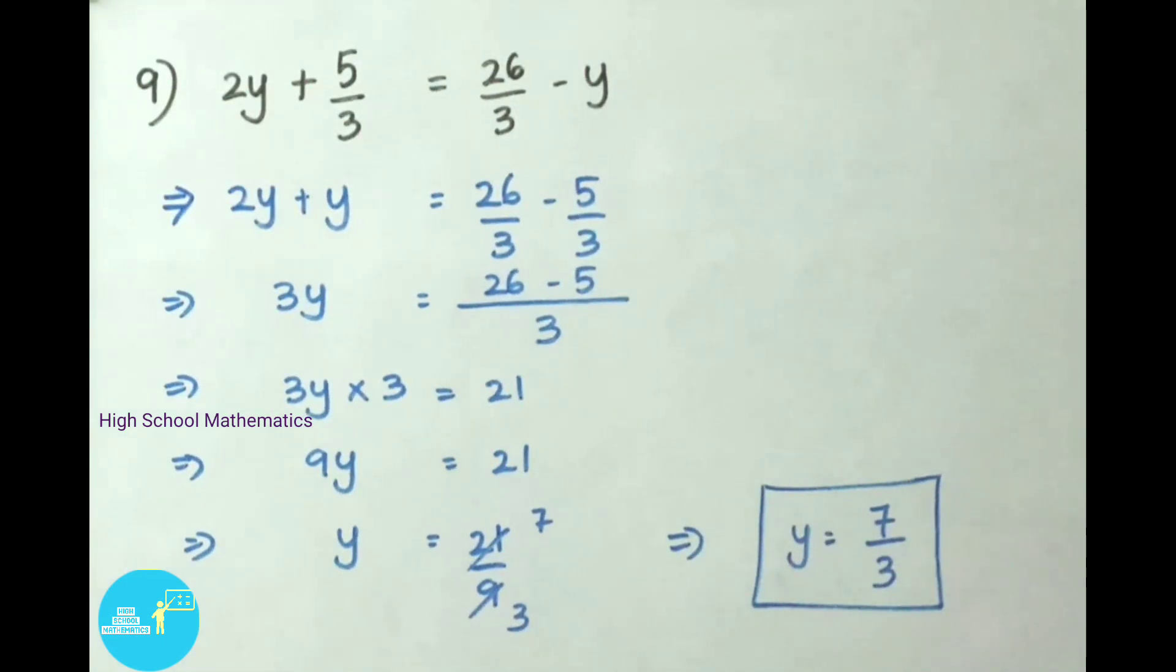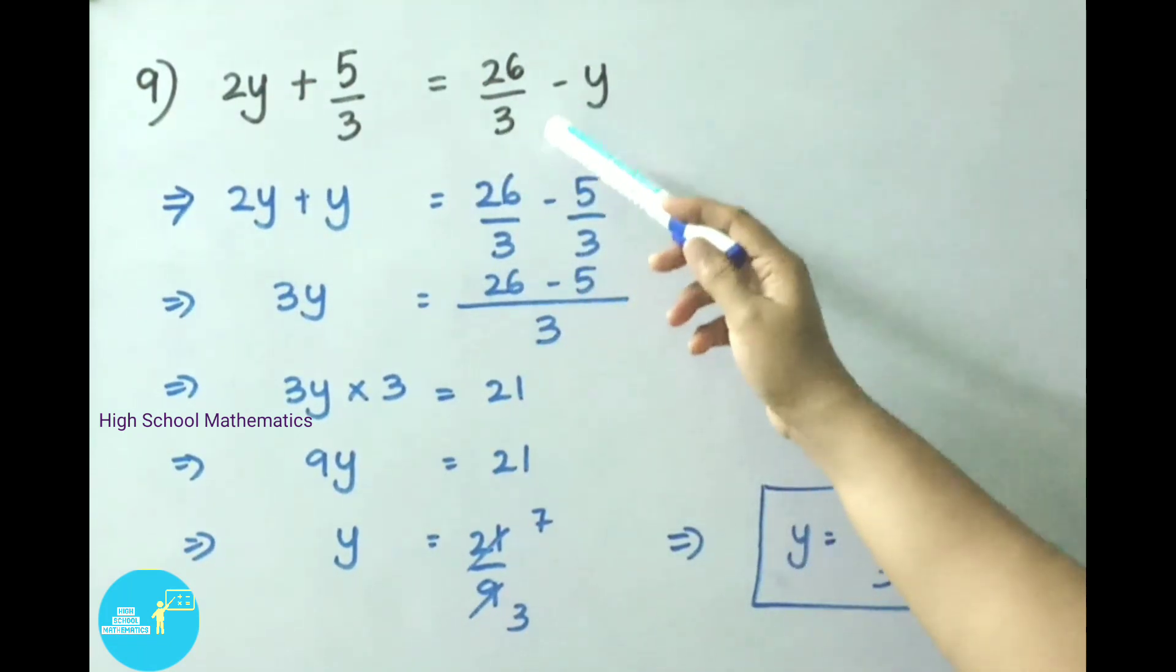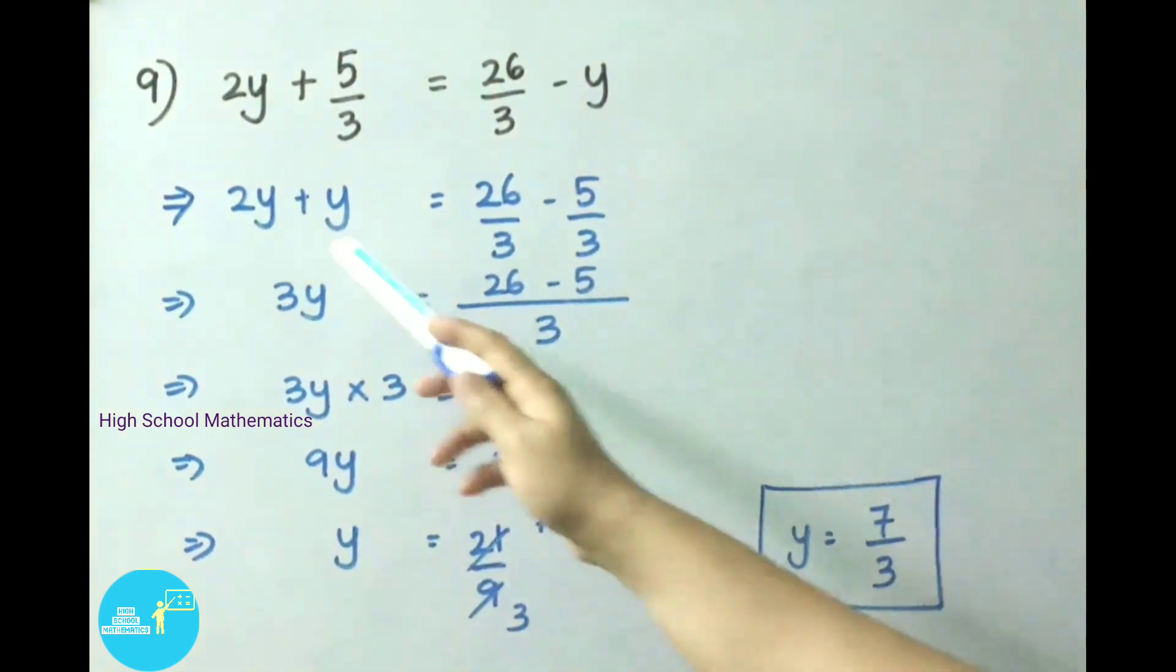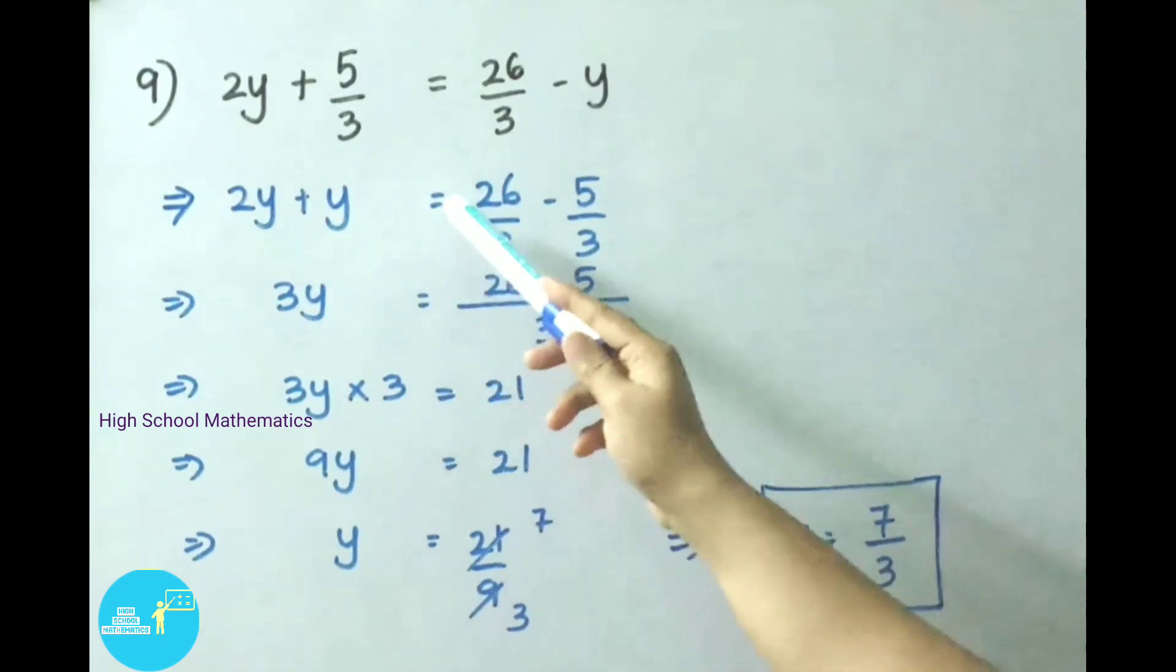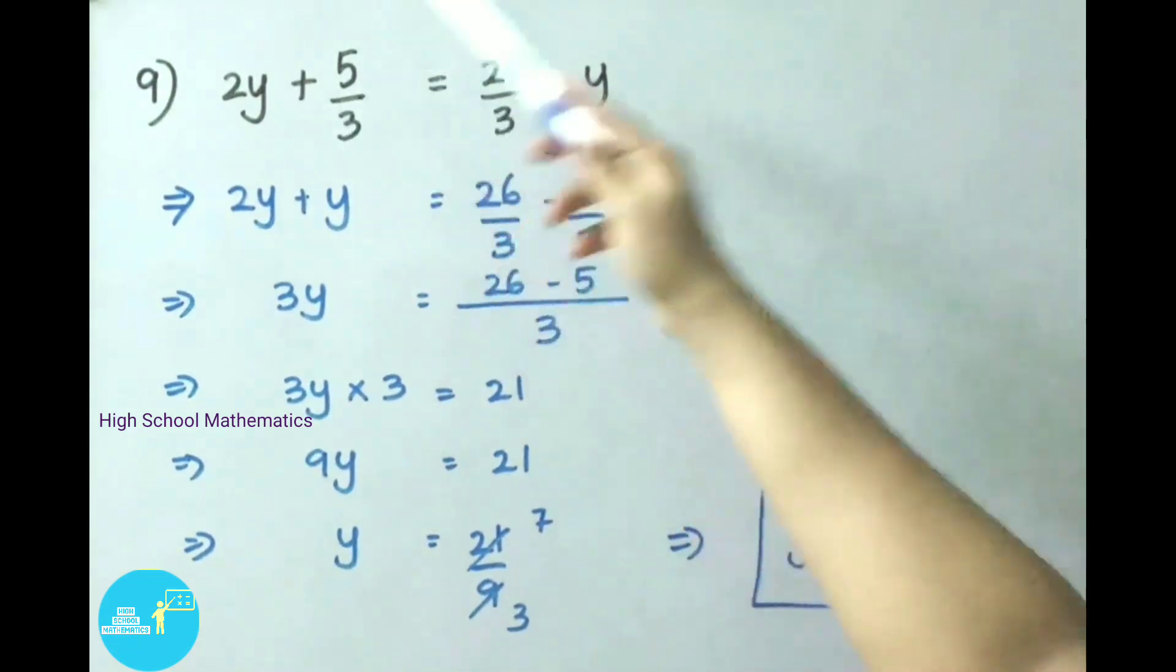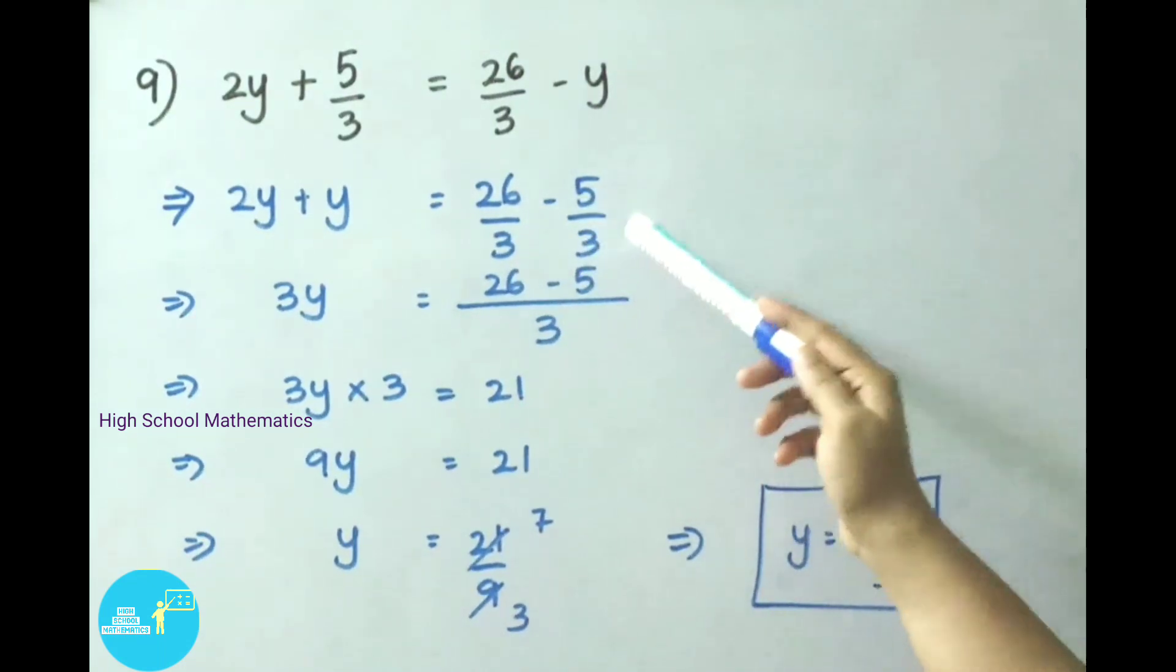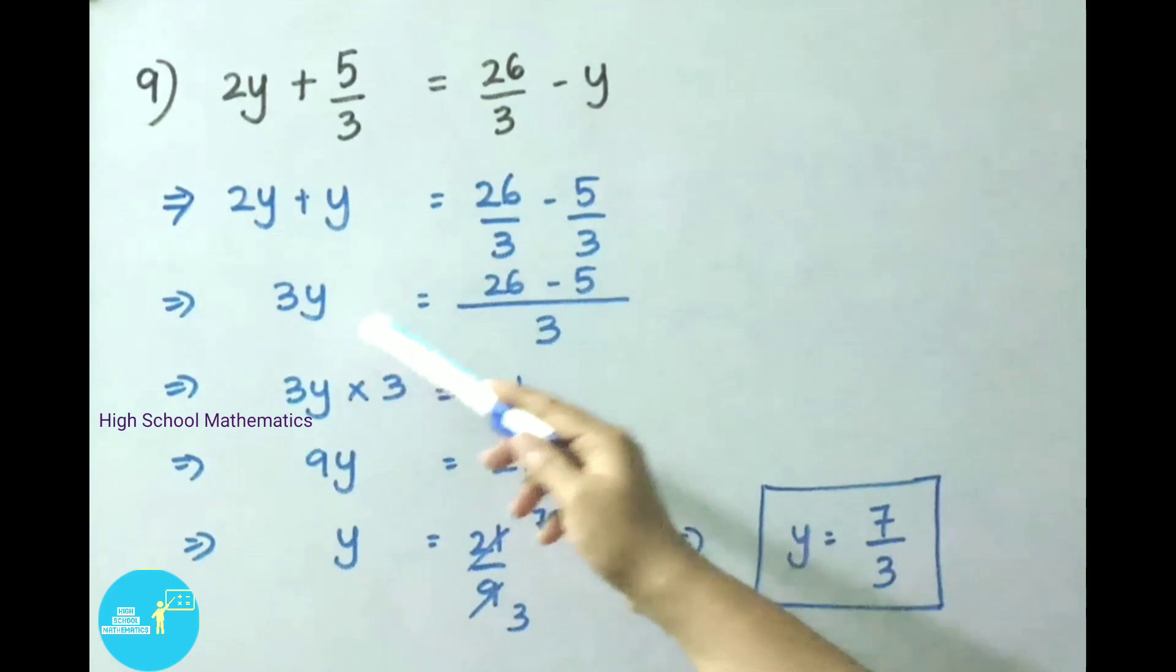See now question number 9. 2y plus 5 by 3 equals 26 by 3 minus y. That implies 2y plus y, minus y on transposing became plus y. Next that equals 26 by 3, plus 5 by 3 on transposing became minus 5 by 3. That implies 2y plus y, that is 3y, equals.